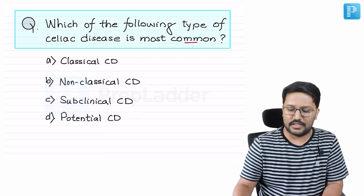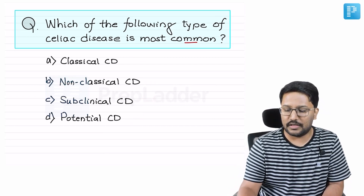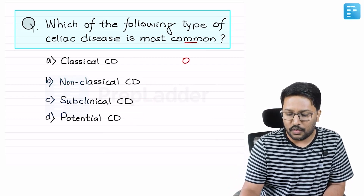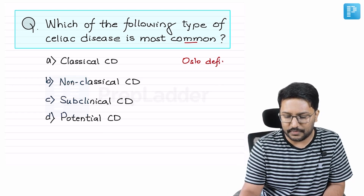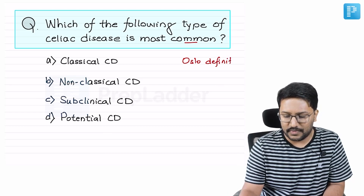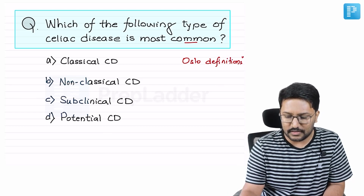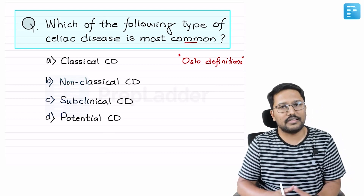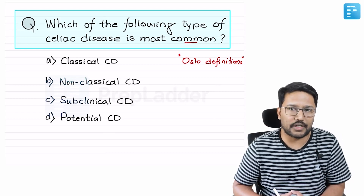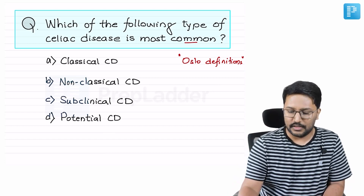When we talk about celiac disease, there is something called the Oslo definitions. Based on the Oslo definitions, we have four subcategories of celiac disease: classical, non-classical, subclinical, and potential.